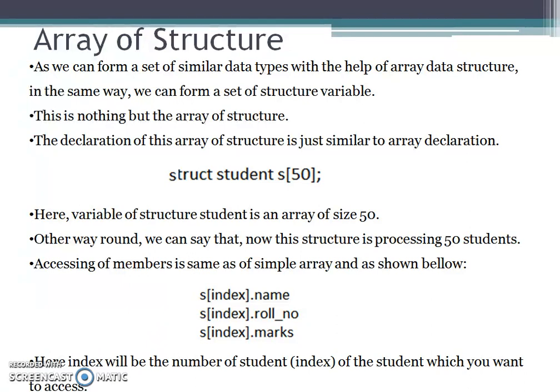Accessing members of an array of structure is the same as for a simple array. The syntax is: variable name followed by its index, dot operator, and the member name. For example, S[index].name, S[index].rollnumber, or S[index].marks. The index here is the number of the student in the structure that you want to access.